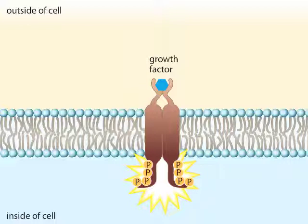The receptor then phosphorylates itself. These initial actions, based on growth factor binding, will culminate in the cell taking a particular action, such as cell division.